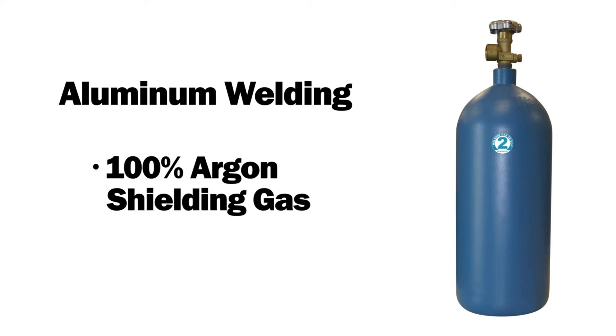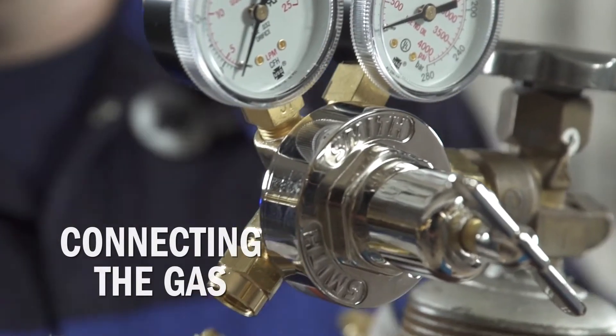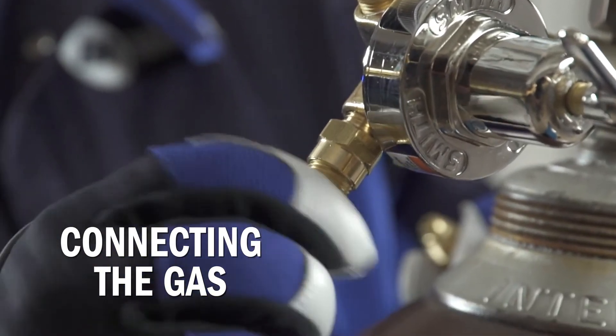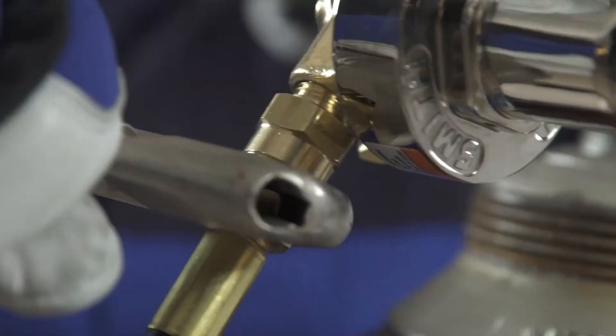For aluminum welding, you will need to use 100% argon shielding gas. Connect the free end of the gas hose to the argon gas regulator. Tighten with a wrench.